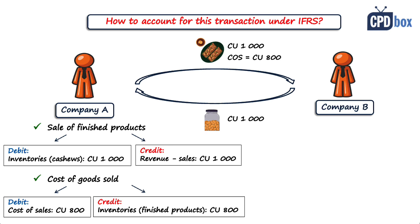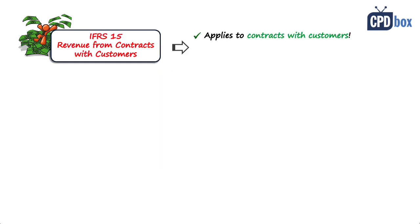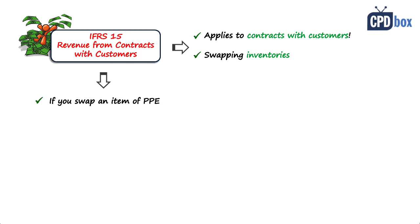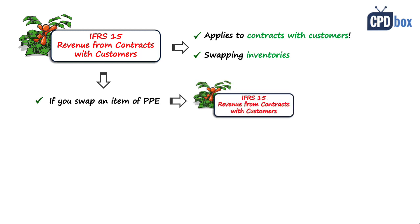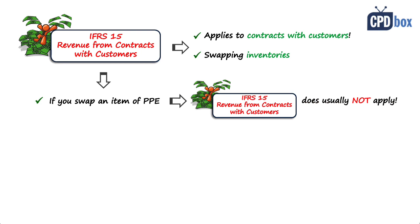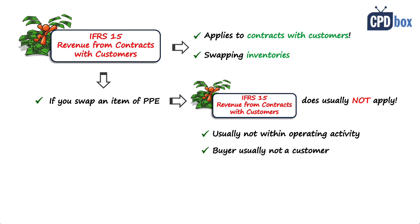Let me add one note. IFRS 15 applies to contracts with customers, and here we are talking about swapping inventories. Sometimes you can also swap an item of property, plant and equipment for another item of property, plant and equipment. In that case, IFRS 15 does not apply because property, plant and equipment is not sold or disposed of within your regular operating activity. You can hardly say that the buyer of your PP&E is your customer. Under IFRS 15, a customer is a party that has contracted with an entity to obtain goods or services that are an output of the entity's ordinary activities in exchange for consideration. So when you swap an item of property, plant and equipment, it does not fall under IFRS 15.